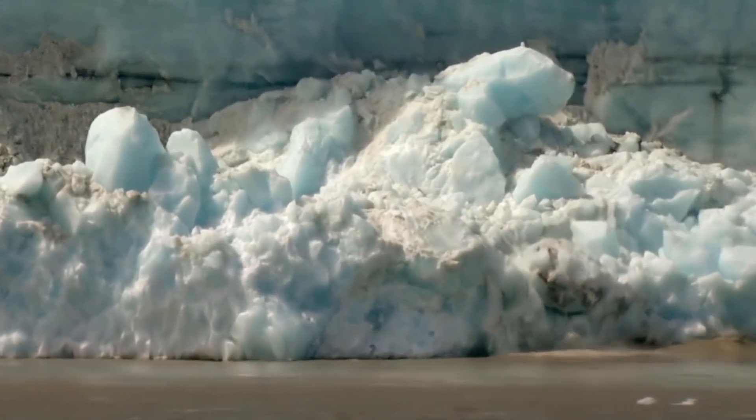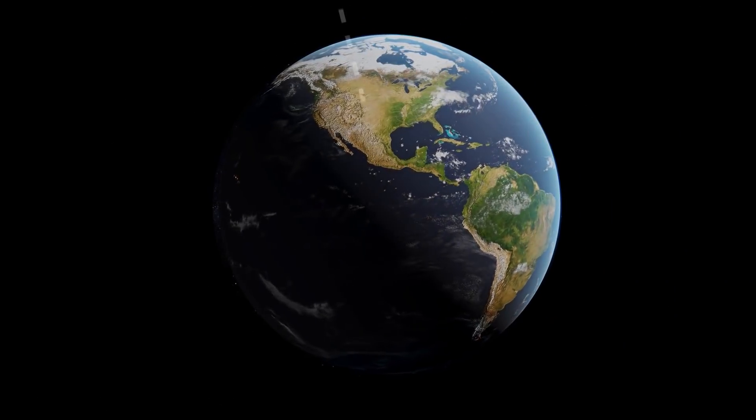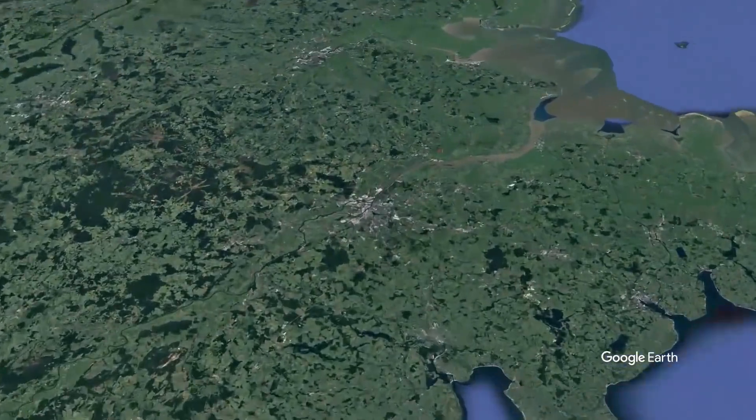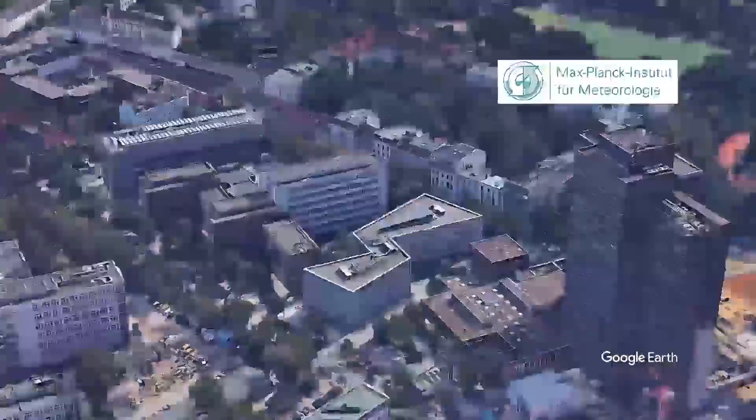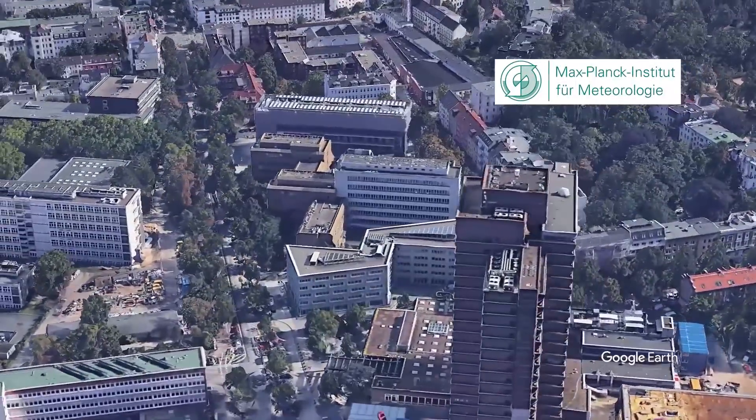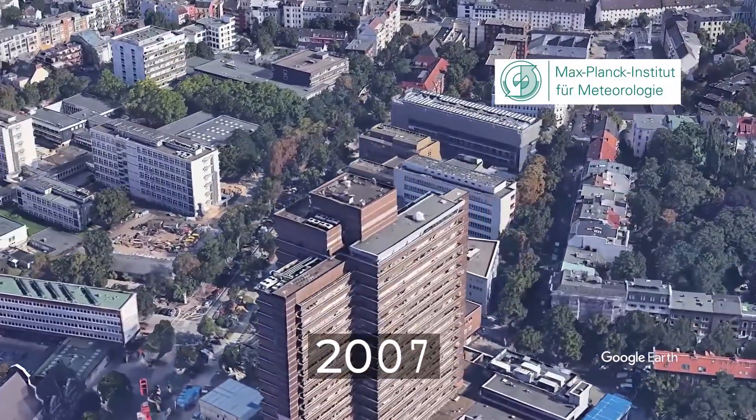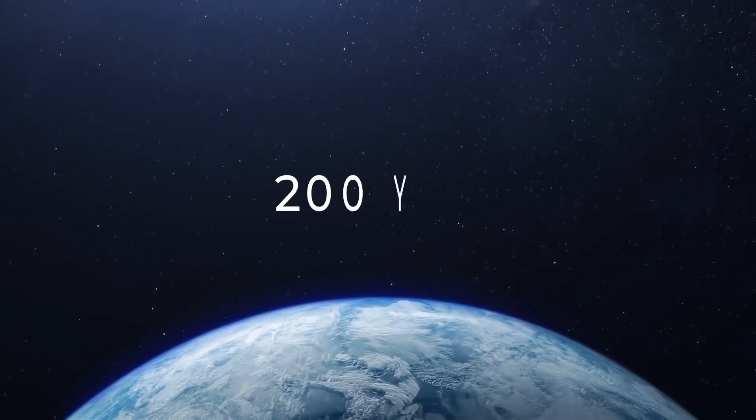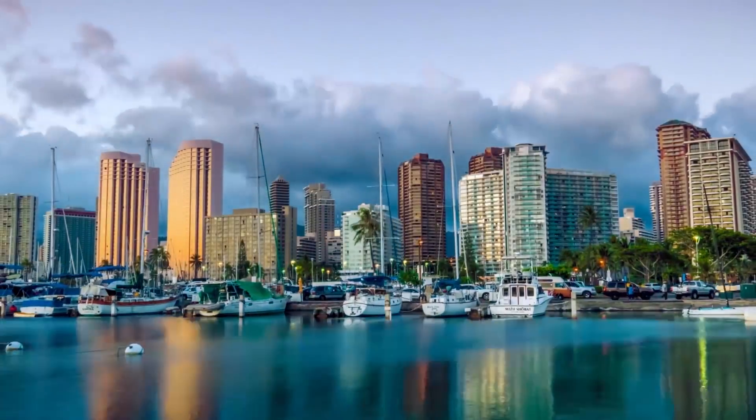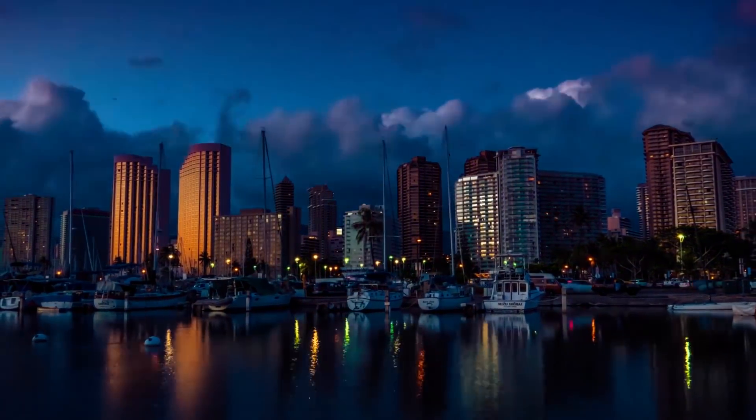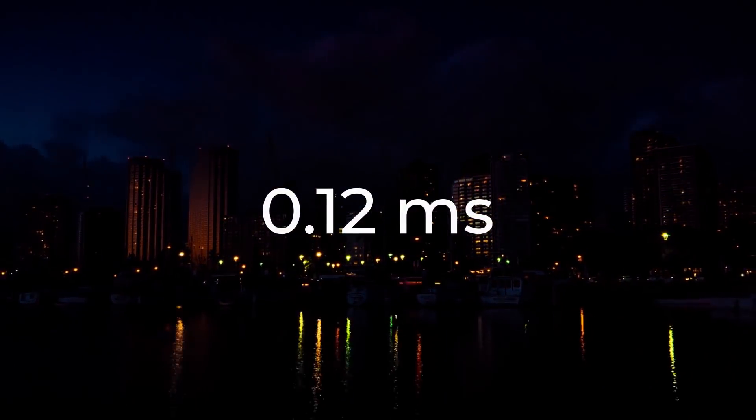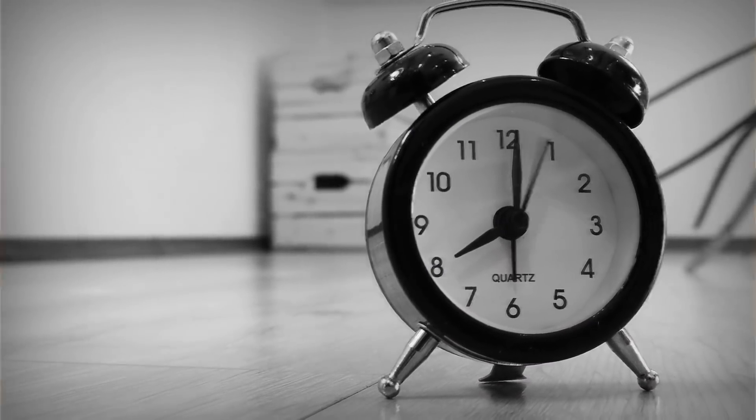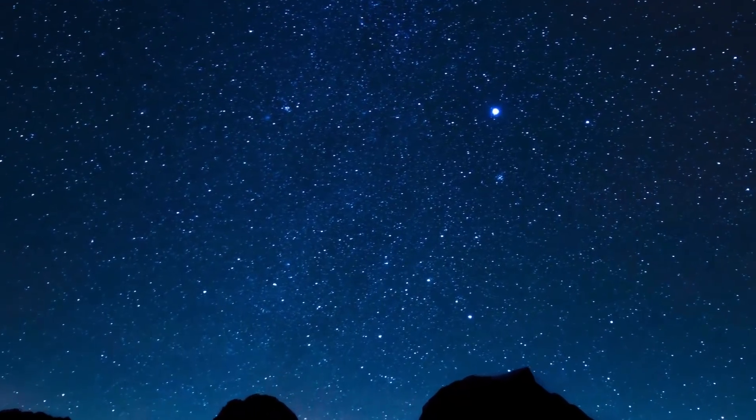Due to global warming, the Earth could begin rotating around its axis faster. Such a shocking forecast was made by scientists from the Max Planck Institute for Meteorology in 2007. According to their calculations, over the next 200 years, the length of the day could decrease by 0.12 milliseconds. You're unlikely to notice these changes on your watch, but if the scientist's forecast is confirmed, the consequences for humanity will be simply terrible.